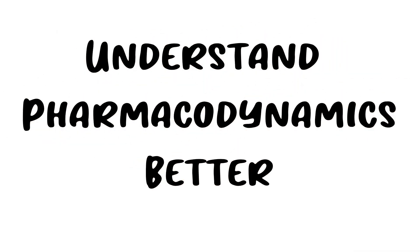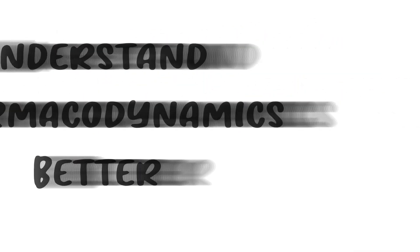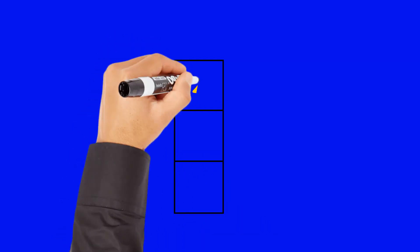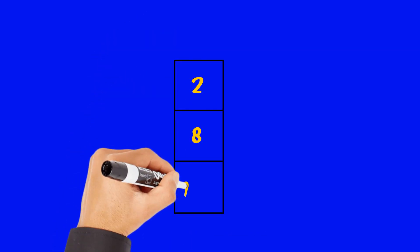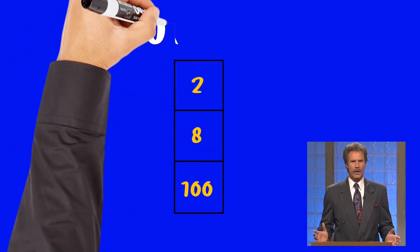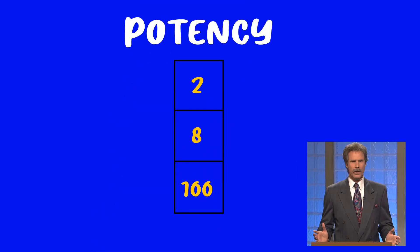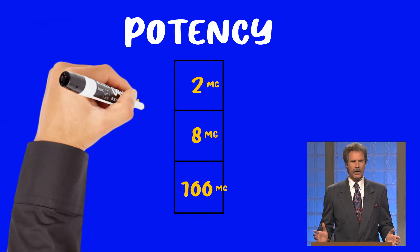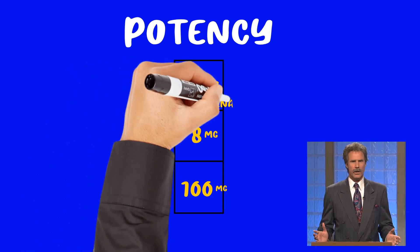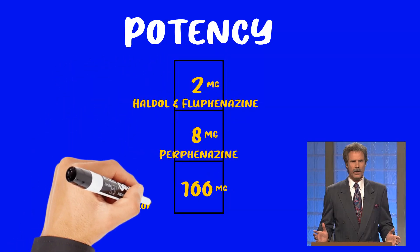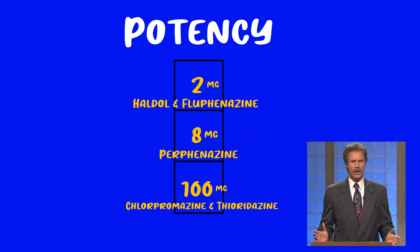This is the 'Understand Pharmacodynamics Better' series, and the categories are potent potables. The scores in this game are not actually scores but the milligram equivalents of the first generation antipsychotics. The reason we need to use milligram equivalents for these drugs is because they have different potency.